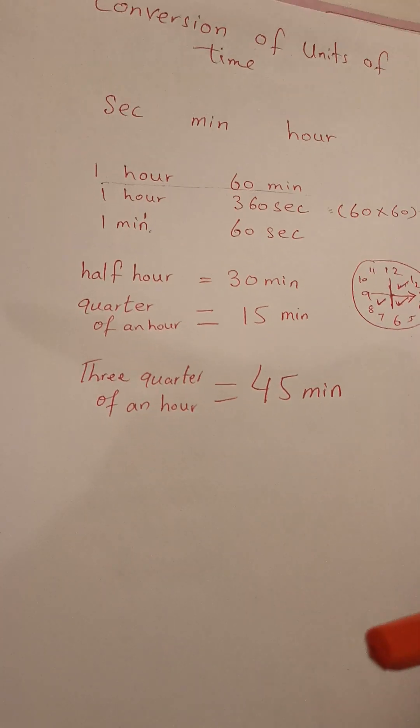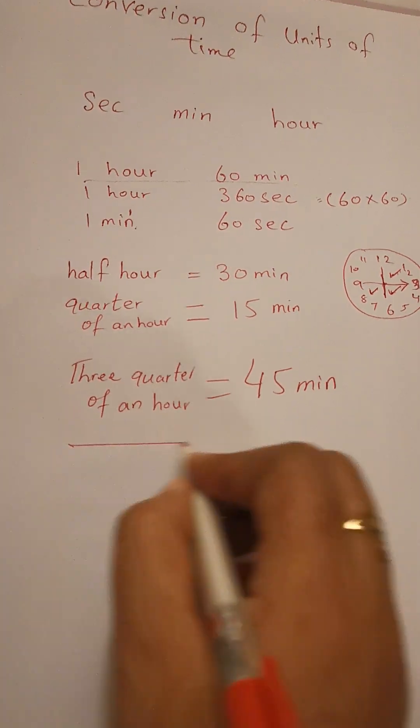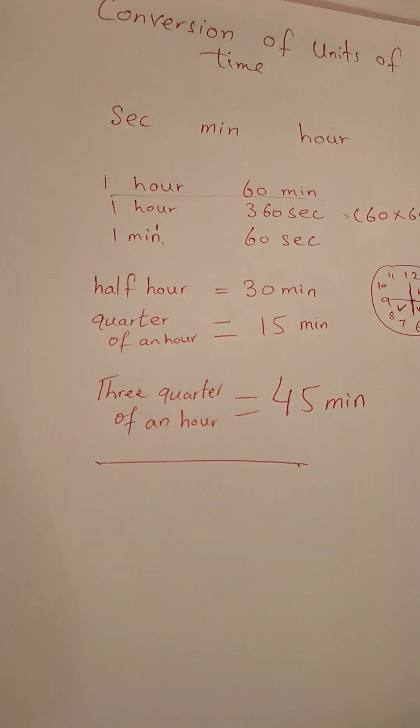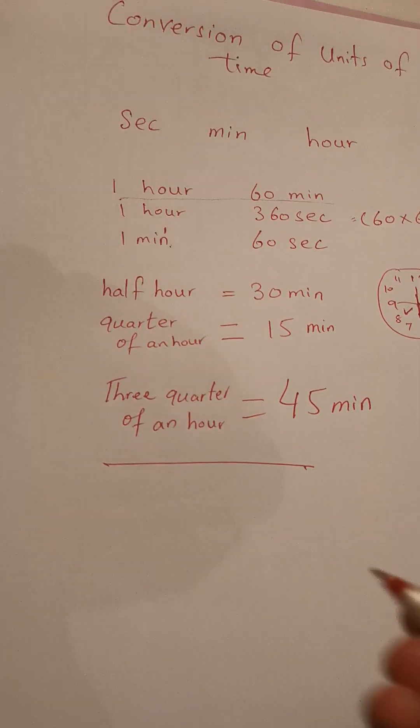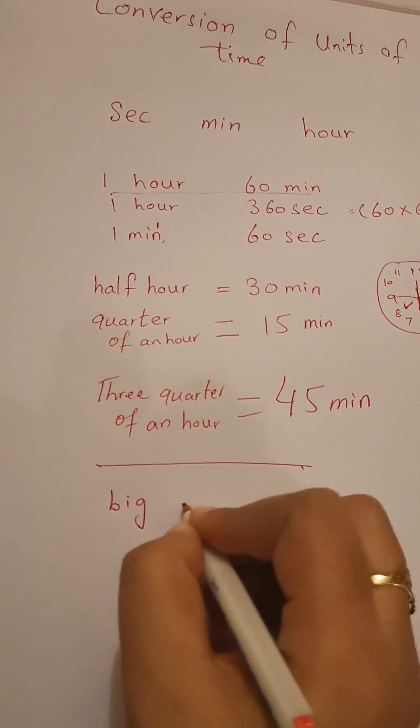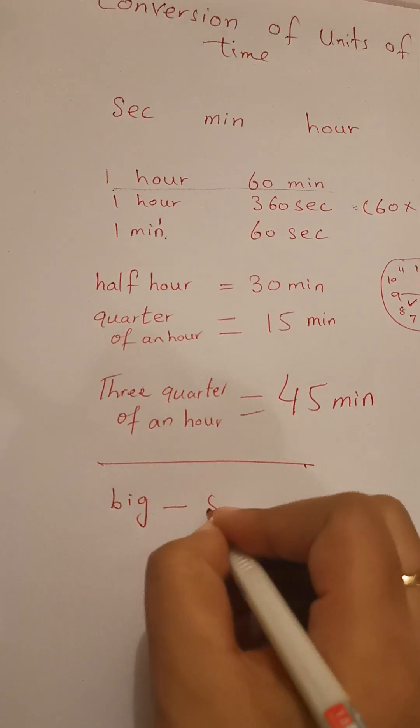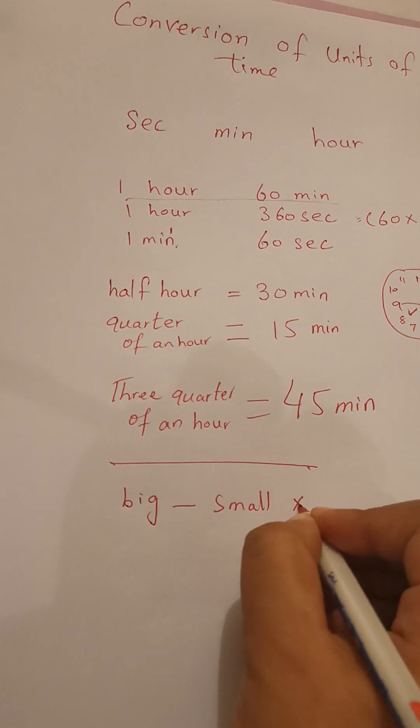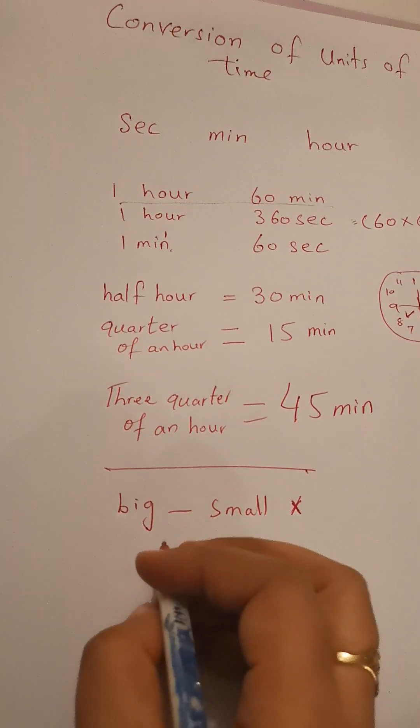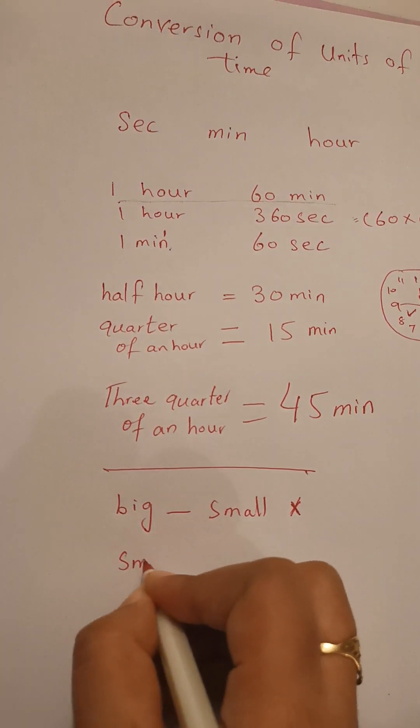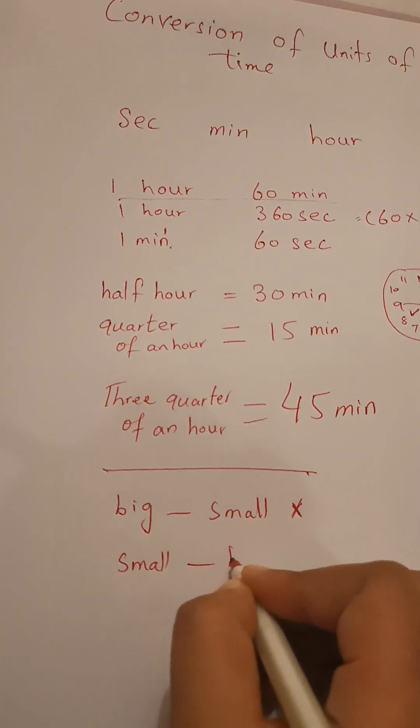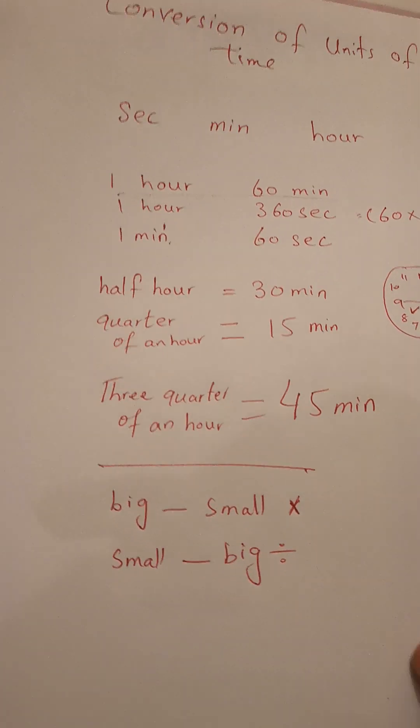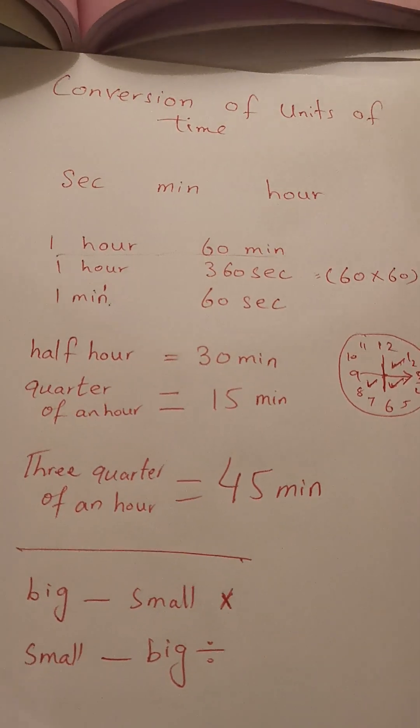Can you see how to convert? Keep in mind about the units. When we are converting the unit from big to small, we are multiplying. And from small to big, we are dividing. I'm going to show you examples.